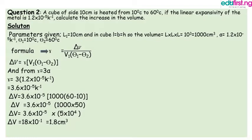The volume V1 equals 10 cubed equals 1000 cm cubed. Alpha is 1.2 times 10 to the power minus 5 per Kelvin. Theta1 is 10 degrees Celsius and theta2 is 60 degrees Celsius.